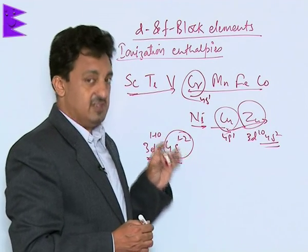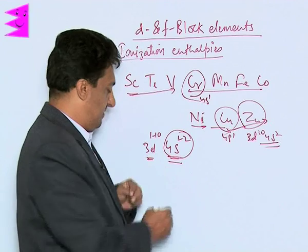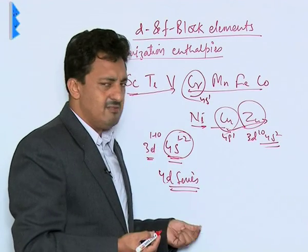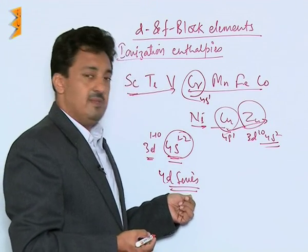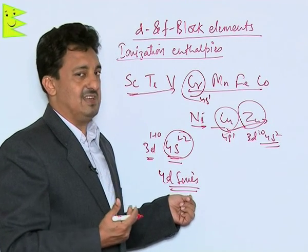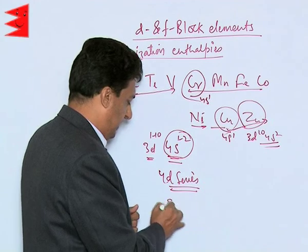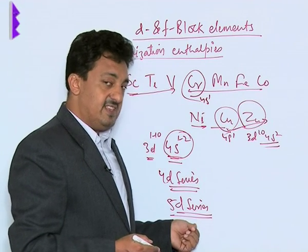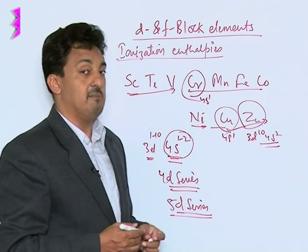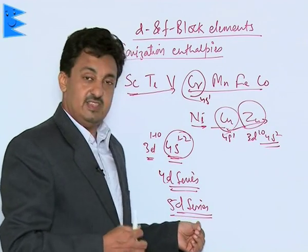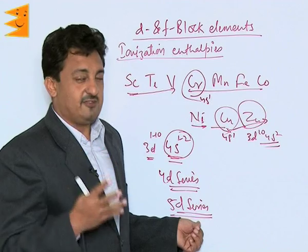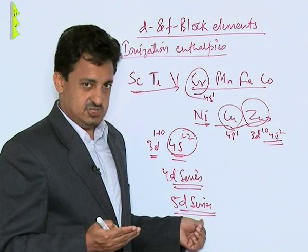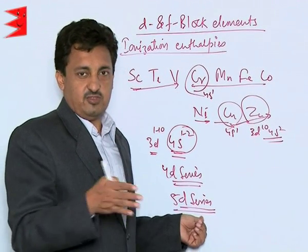This is the general trend for the 3d series. When we move down to the 4d series, those elements have lower ionization enthalpies than the 3d elements because their atomic sizes are larger and the electrons are screened to some extent. However, when we move to the 5d series, its ionization enthalpies are quite comparable to — actually very high, similar to — those of the 3d series. The main reason is lanthanide contraction: poor screening by the 4f electrons leads to poor screening of the 5d electrons as well.